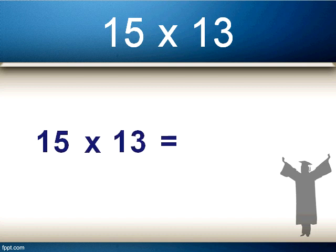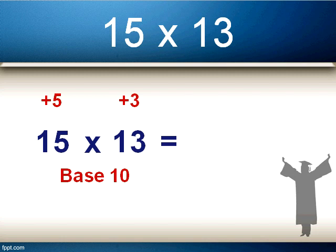Note both numbers are reasonably close to 10, so we will use 10 as our base number. In later examples the base number could be 20, 30, 50, or even 100. So for this calculation — 15 times 13 — we'll be using base 10. 15 is actually 5 more than our base number 10, so plus 5, and 13 is 3 more than our base number 10, so plus 3.